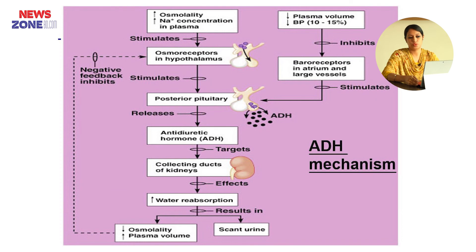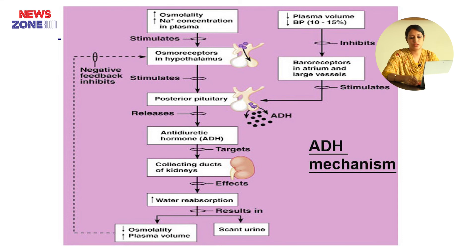Now, the ADH mechanism. Increased osmolarity and increased sodium concentration in the plasma, and decreased plasma volume and blood pressure by 10 to 15 percent, inhibit baroreceptors of the atrium and large vessels, which stimulates the posterior pituitary. Increased osmolarity also stimulates osmoreceptors of the hypothalamus. Both causes lead to stimulation of the posterior pituitary and release of ADH. ADH targets the collecting duct of the kidney, and the effect is increased reabsorption of water, resulting in decreased osmolarity, increased plasma volume, and scanty urine formation.